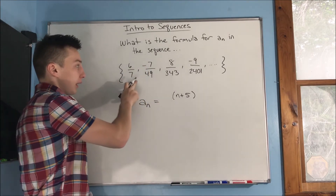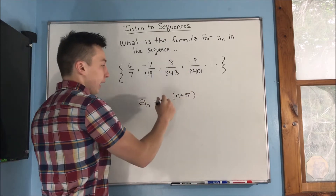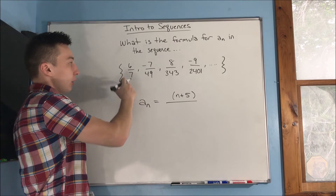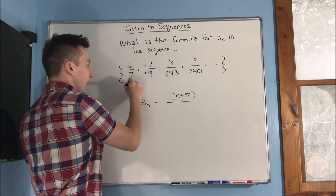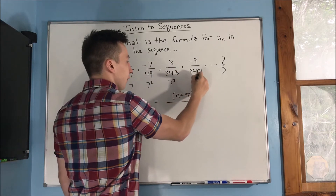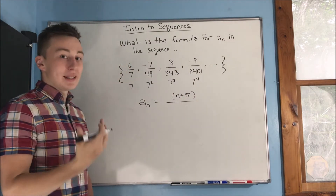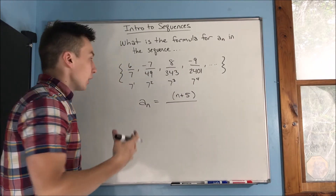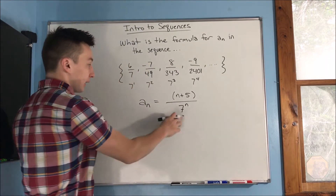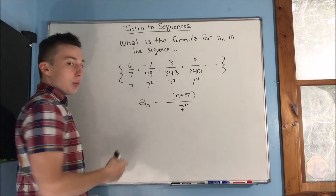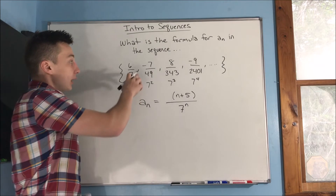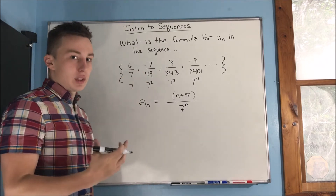For our denominator, we have seven — you can think of this as seven to the first, seven squared, seven to the third power, seven to the fourth, because we're multiplying by seven each time. So we can just write seven to the n. Seven to the first is when n equals one, so that works out. Now lastly, we need to take care of the negative, which is alternating.